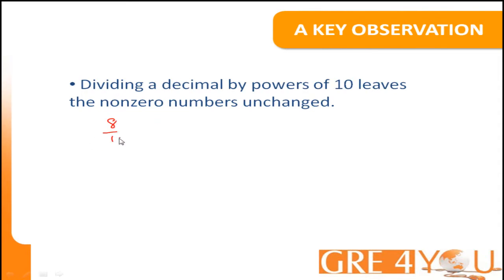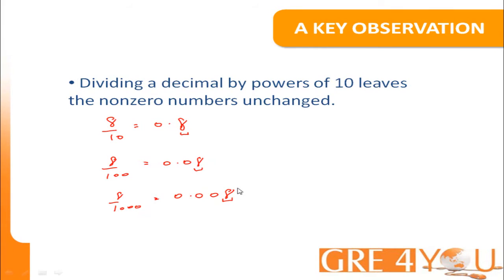What do I mean by this? Let's say I have the number 8 over 10. This can be written as 0.8. If I were to write 8 over 100, I would write it as 0.08. Similarly, 8 over 1000 is equal to 0.008. Notice in all three numbers that the number 8 remains unchanged throughout, even though we are dividing by greater and greater powers of 10. This is a key observation that's going to help us solve this problem.